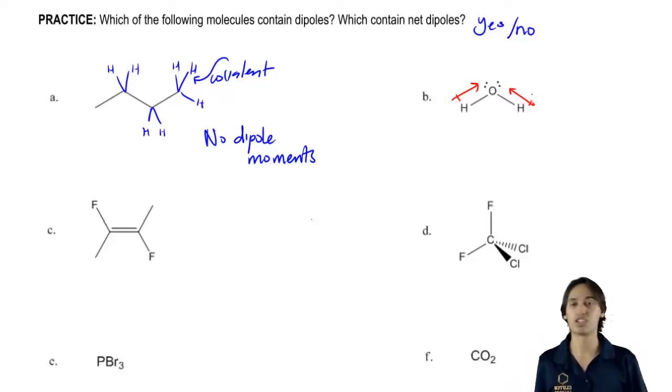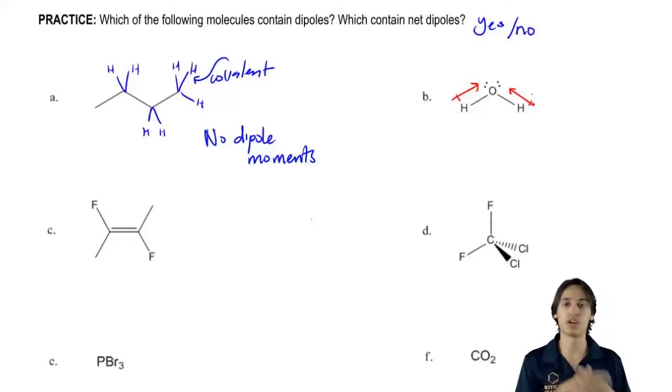Remember oxygen is pretty electronegative. Hydrogen is not that electronegative. So this would be a polar bond and I would have two dipole moments going towards the O.